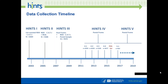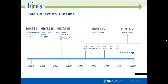We moved into HINTS 4. We decided to change the frequency because so much was changing — this was at the beginning of the HITECH Act, the Health Information Technology for Economic and Clinical Health Act, from the stimulus package. That was causing people to go online and start using hospital portals. We also had the Affordable Care Act. So with so much happening, we increased the frequency and did four cycles.